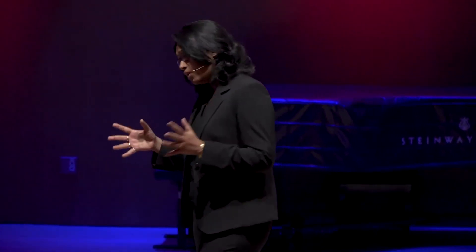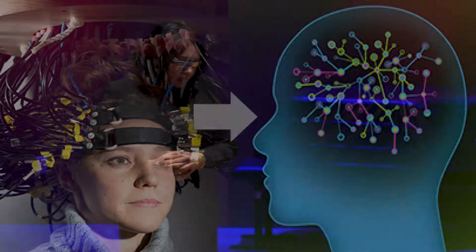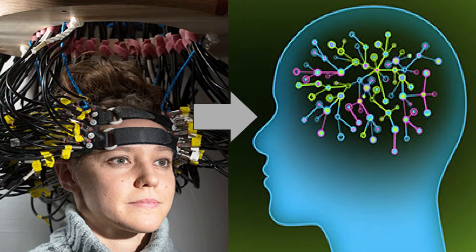We have data on the creative products of several individuals, and we also have information on their brain structures, or what we call their brain networks. These brain networks have been collected using a brain imaging technique called diffusion tensor imaging, which basically measures the number of neuron connections among different regions of the brain.